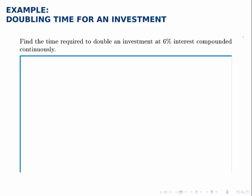Here we're asked to find the time required to double an investment at 6% interest compounded continuously. This is a common rule of thumb that people use to evaluate an investment and get an idea of how long it would take to recoup their money or to compare two different investments.